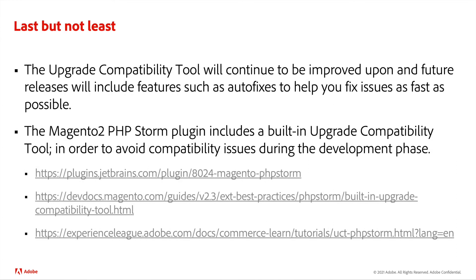The Upgrade Compatibility Tool will continue to be improved upon, and feature releases will include features such as autofixes to help you fix issues as fast as possible. Just for you to know, there is a Magento 2 PHPStorm plugin that includes a built-in Upgrade Compatibility Tool, so that the developers will have the chance to run this tool from the IDE, which will let them avoid compatibility issues during the development phase. Please check the documentation if you are interested in this topic.